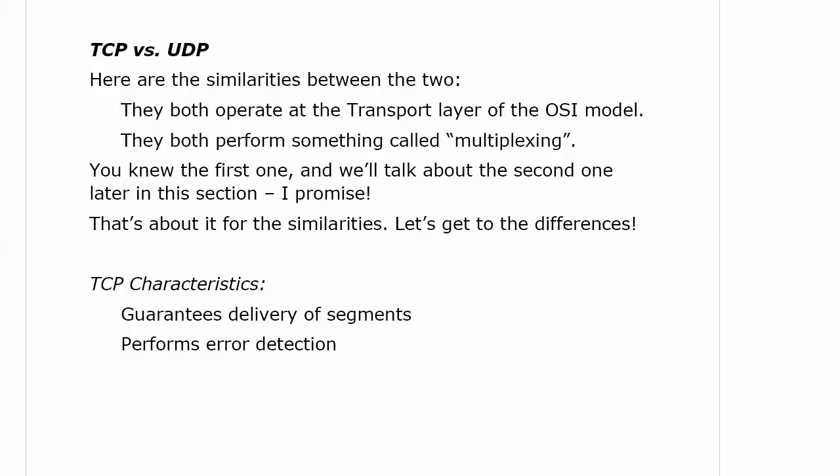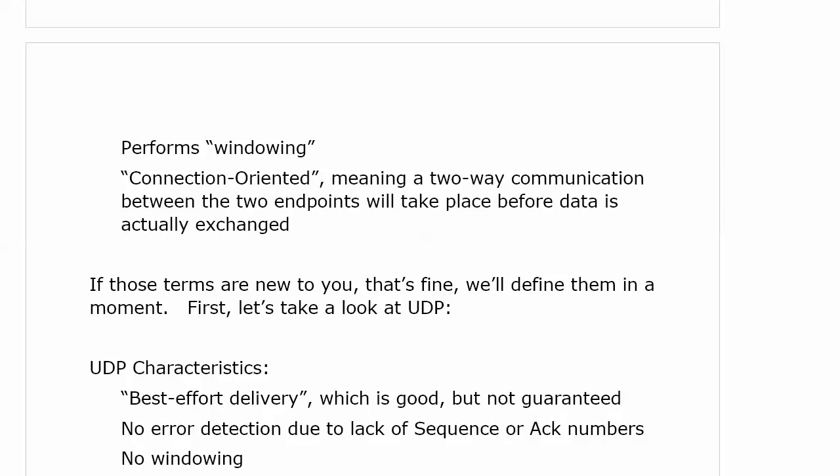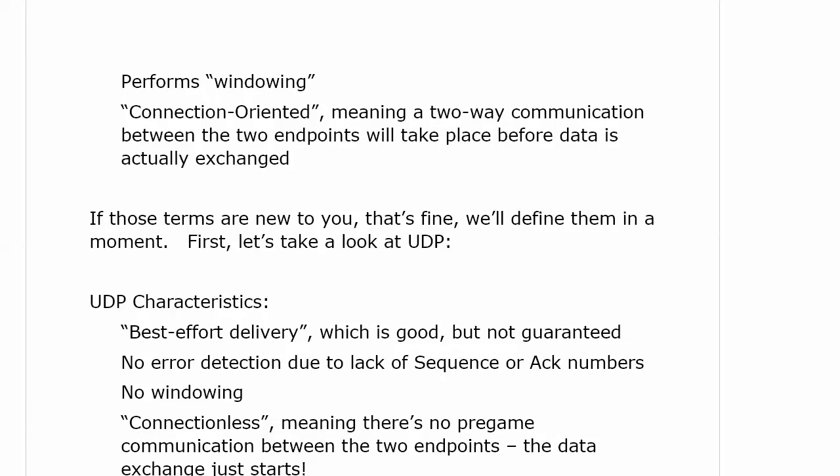First off, TCP — it guarantees delivery of our segments, which sounds like a pretty good deal. It performs error detection as well. It performs windowing, which we'll get to. And then it's connection-oriented, which means a two-way communication between our endpoints takes place before data is actually exchanged. It's kind of like an adjacency — not exactly like OSPF or EIGRP, but those protocols have an underlying connection before they start sending packets.